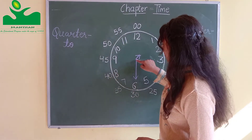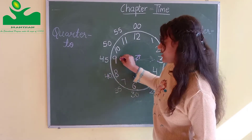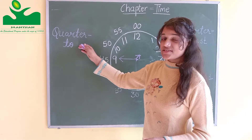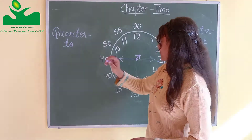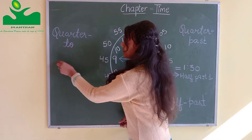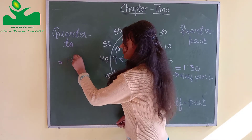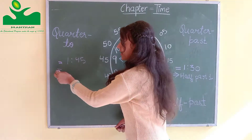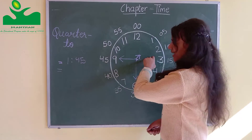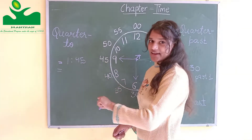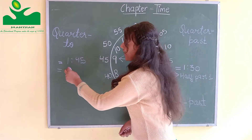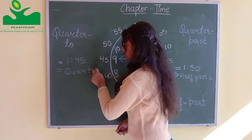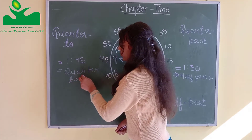And quarter to means when the longer hand is towards nine. So here the timing is 1:45, but when you write it in words, 15 minutes are left before 2 o'clock, so you will write quarter to 2.